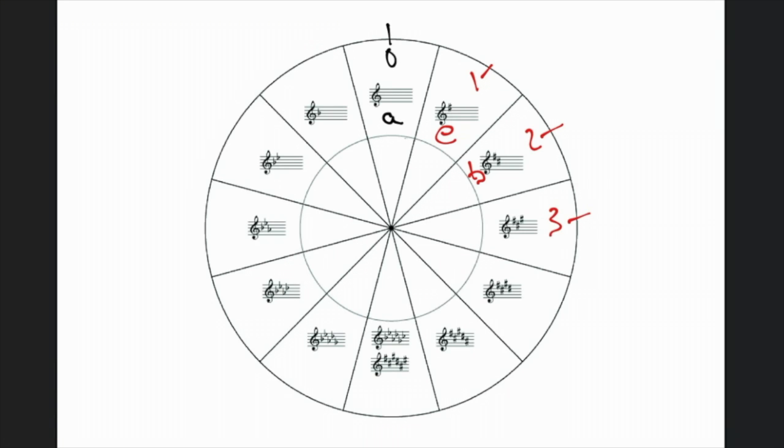We now want to find out position three. The three sharps are F sharp, C sharp and G sharp. Which minor scale has those sharps in its scale?